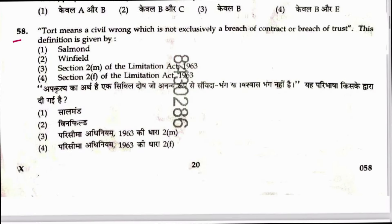Question 58: Tort is a civil wrong which is not exclusively a breach of contract or breach of trust. This definition is given — and it is the definition in the Limitation Act, Section 2(m). Answer is 3.